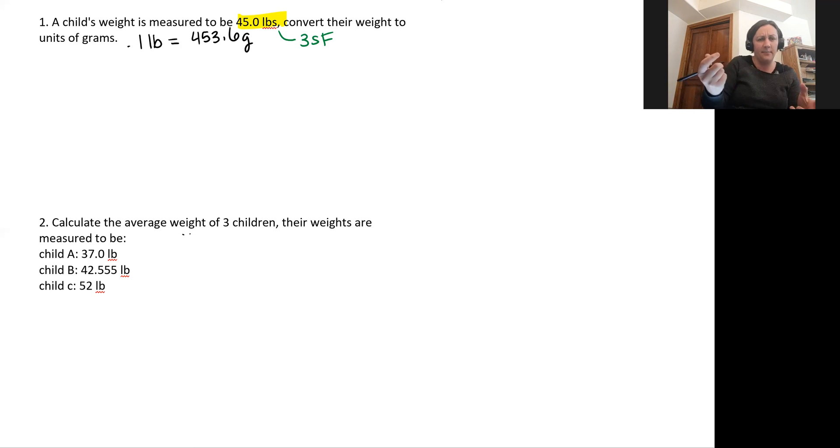I'll set this up using dimensional analysis. I've got my 45.0 pounds. I need to convert this into grams, so I'm going to put grams on the top of that fraction and pounds on the bottom. So my pounds units will cancel out when I plug this into my calculator. So that one pound equals 453.6 grams. I'm just going to plug this in and when I do I'm going to get a value that is big: 204,117 grams.